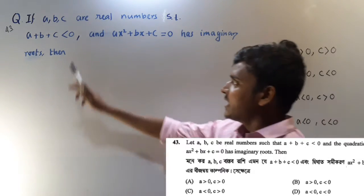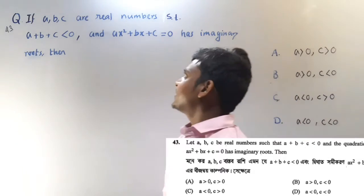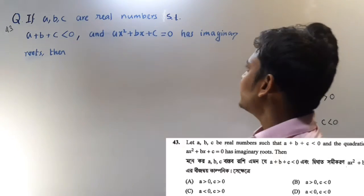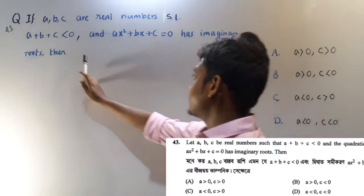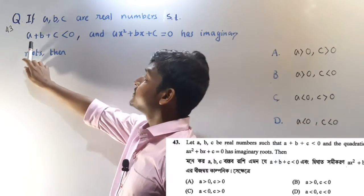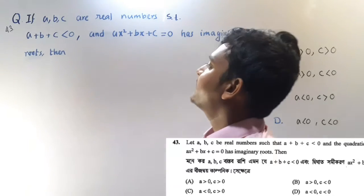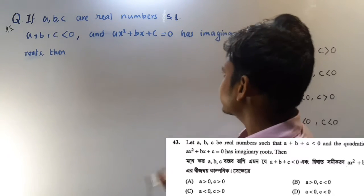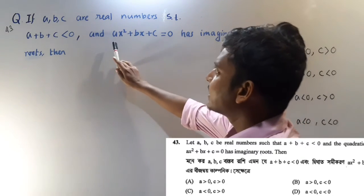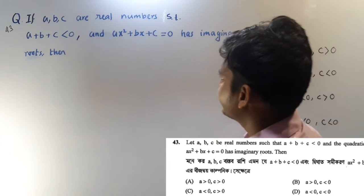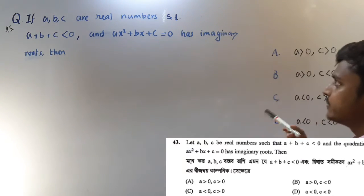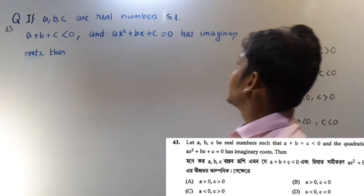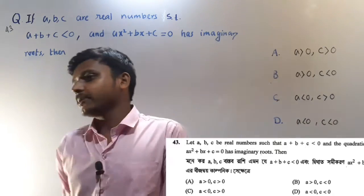Next question: we have A, B, C as real numbers, and we are given the condition that A plus B plus C is negative. We have asked for the condition that makes AX squared plus BX plus C have imaginary roots.